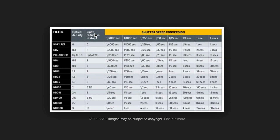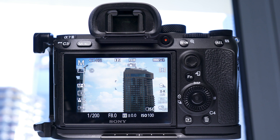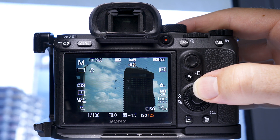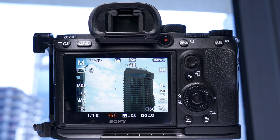You might also notice that ND filters are sometimes called a three stop filter, a five stop filter, or a ten stop filter. This is basically describing to you how much light they stop getting into your camera. For instance, if you're taking a photograph with a three stop filter on, you'd have to drop your settings by three stops to get the same exposure as you would without the ND filter.